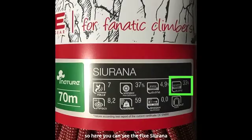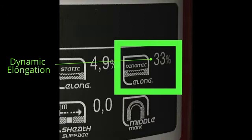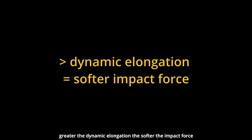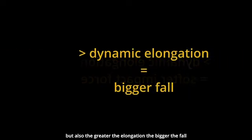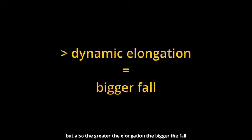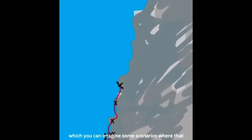So here you can see the fixed Suriana has a dynamic elongation of 33%. You've made the connection here that the greater the dynamic elongation, the softer the impact force, but also the greater the elongation, the bigger the fall is going to be, which you can imagine some scenarios where that could be a problem.